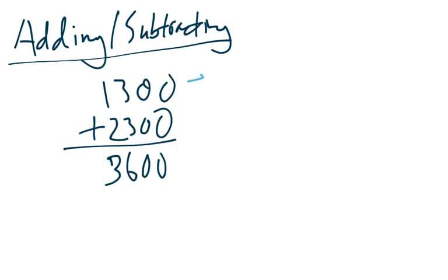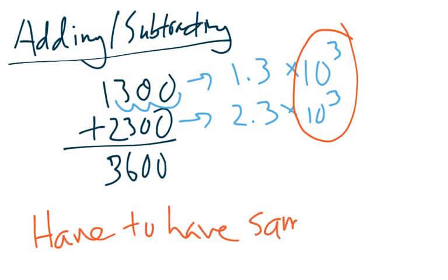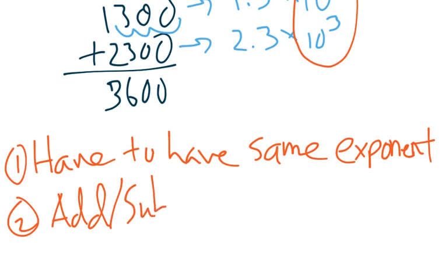Well let's convert these into scientific notation. This would be 1.3 times 10 to the 1, 2, 3. And this would be 2.3 times 10 to the third power. When it comes to adding and subtracting, the big thing is you have to have the same exponent. So make sure you have the same exponent. After that, you just add or subtract the numbers.